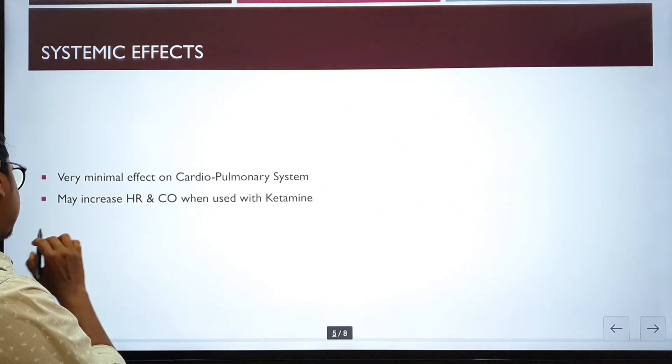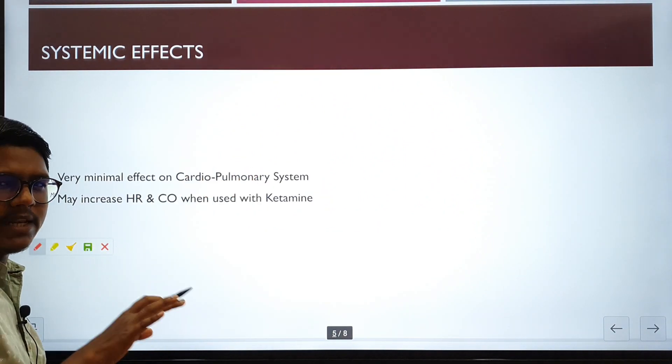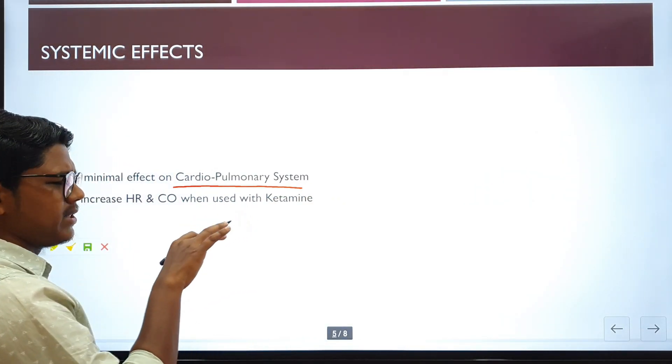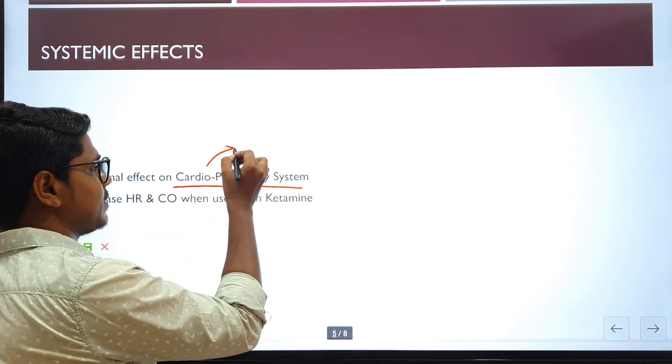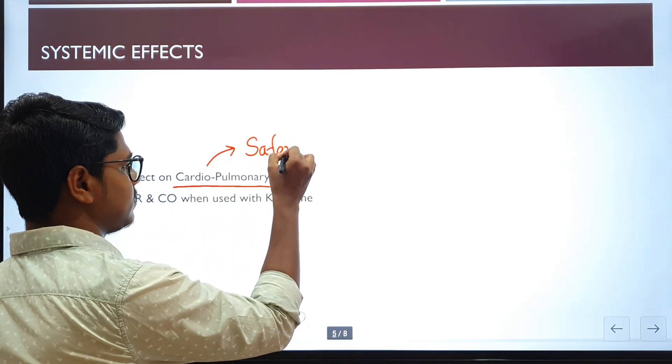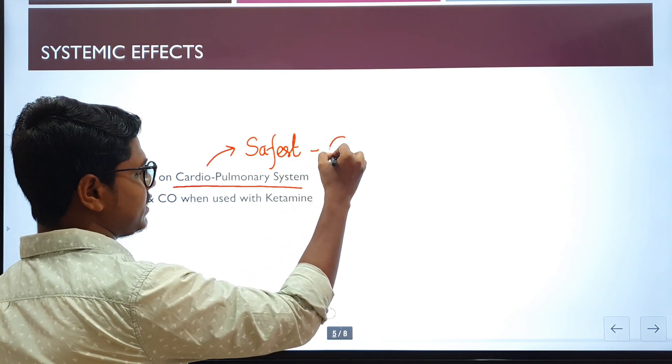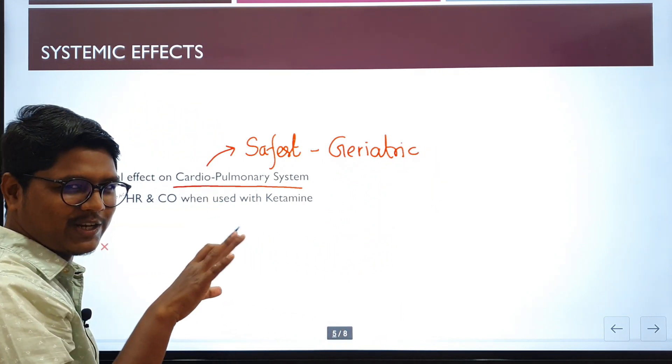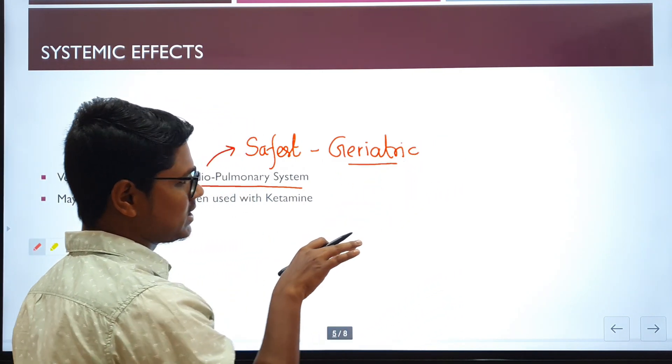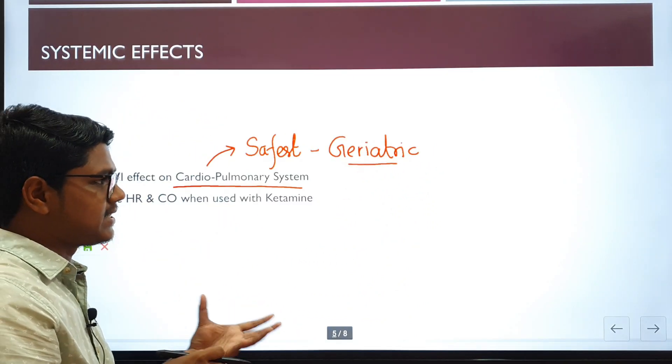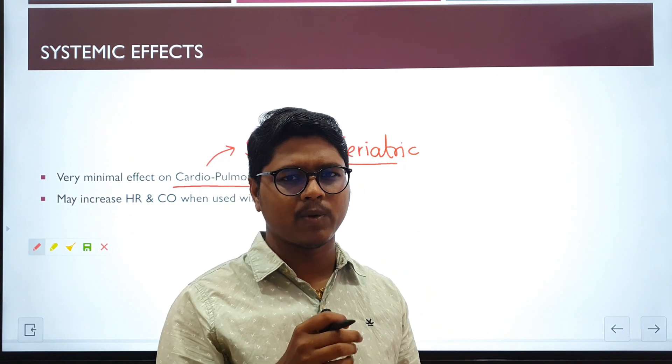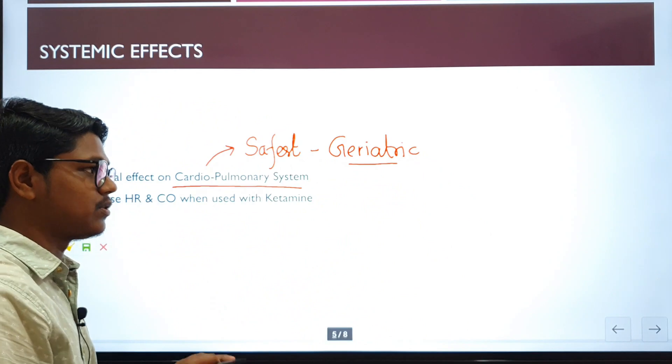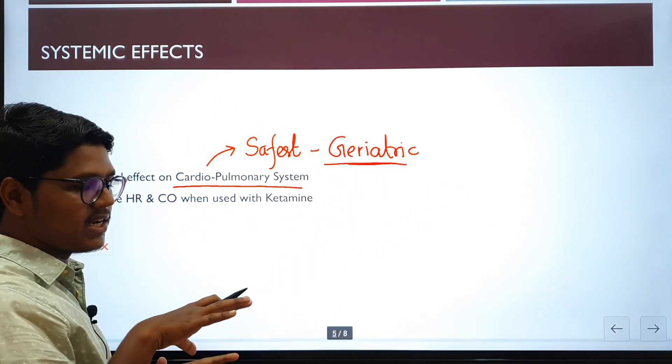Next, the systemic effects. They have very minimal effect on the cardiopulmonary system. They don't change any parameters of the cardiopulmonary system, or they may change very slightly. That is why benzodiazepines are one of the safest drugs, one of the safest drugs to be used in geriatric patients. This was a question in my internal or external examination. There were four options: which drug is very safe in geriatric patients? There was xylazine, acepromazine, and some barbiturates. And there was benzodiazepine, diazepam. So benzodiazepines are very, very safe in the case of geriatric patients.